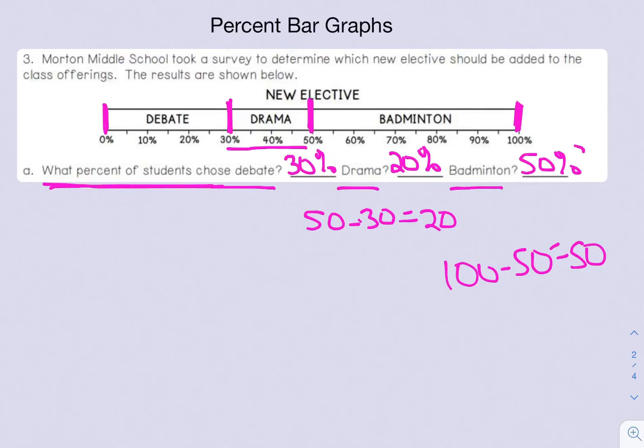Notice that all three sections add up to 100 percent. A percent bar graph has to add up to 100 percent. So that's a good way to check your answer.